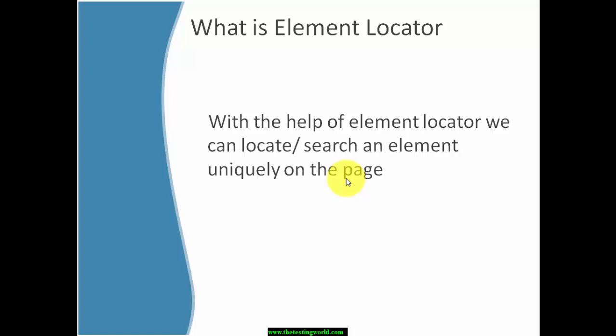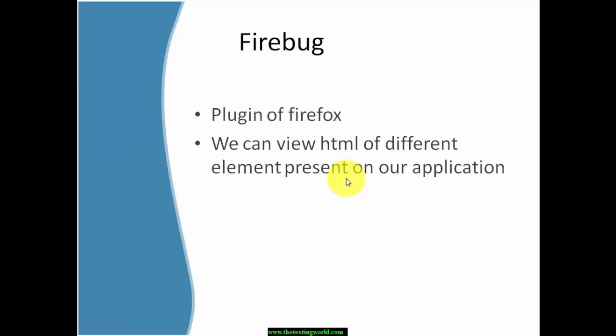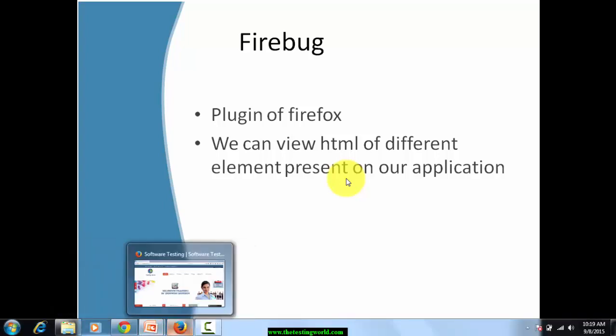To uniquely locate an element we need to look at the HTML of the page. To view the HTML of any element we need a small Firefox plugin called Firebug. The different types of element locators available in Selenium are: ID, Name, Class, Link, CSS, and XPath. We are going to cover all these element locators in detail. To find the unique property of any element, we need to go into the HTML of the page using Firebug.